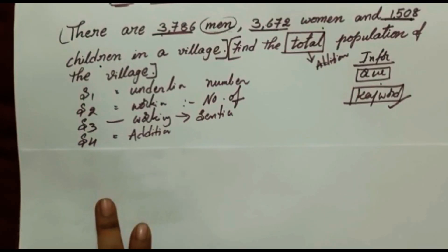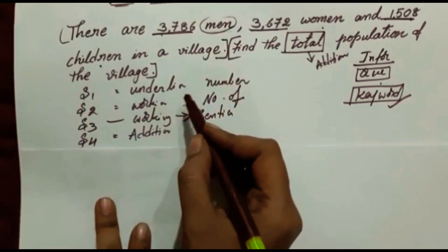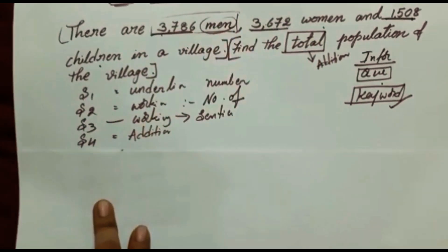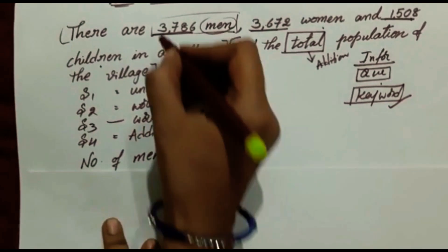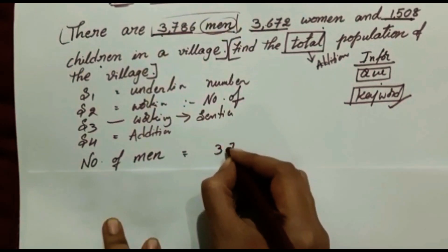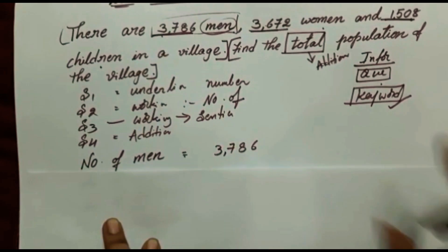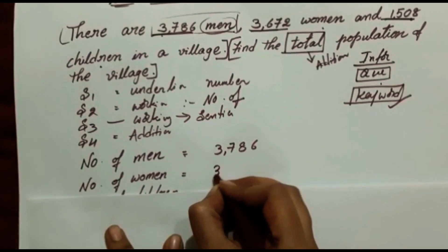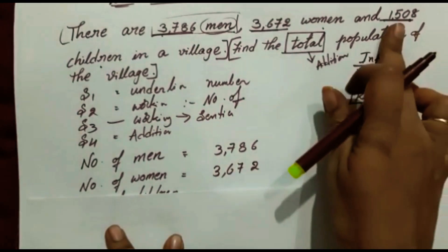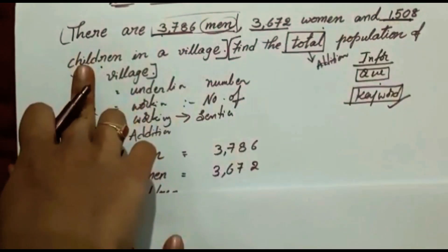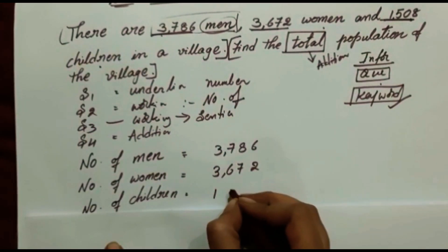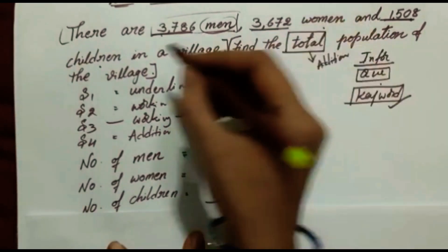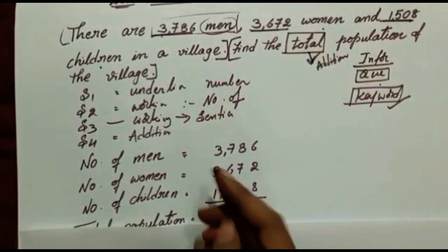Let's write the working for this word problem. Step 1 is to underline the numbers. Number of men: 3786. Number of women: 3672. Number of children: 1508. The keyword is 'total', so we add. Write the addition symbol.